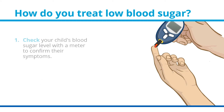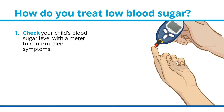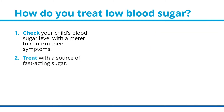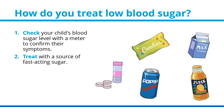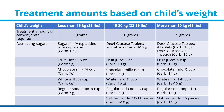How do you treat low blood sugar? First, check your child's blood sugar level with a meter to confirm their symptoms. Then treat with a source of fast-acting sugar. Examples include fruit juice, milk, regular pop, Skittles, and Dex-4 tabs. The amount of fast-acting sugar used is determined by your child's weight. Always carry a fast-acting sugar your child will eat so it's available whenever needed. Other foods such as honey (for children over 1 year of age), jams, jellies, and maple syrup can also be used to quickly increase blood sugar.